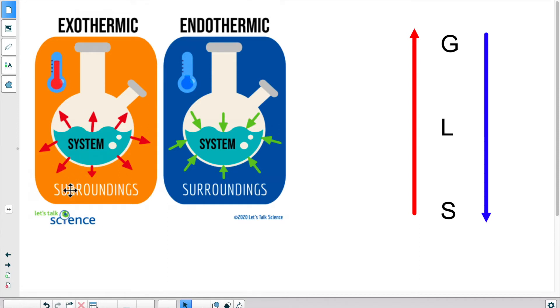As an example, if the surroundings are getting warmer, that means the system had to release energy into the surroundings, so this would be an exothermic reaction. If the surroundings get colder, well, where did the energy go? It had to go into the system, making the reaction endothermic.